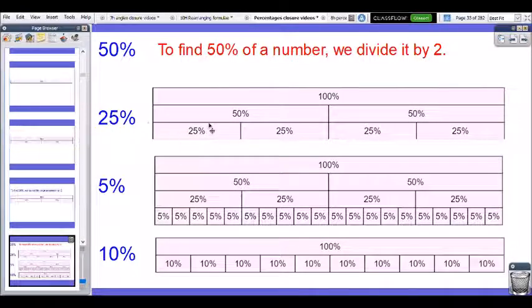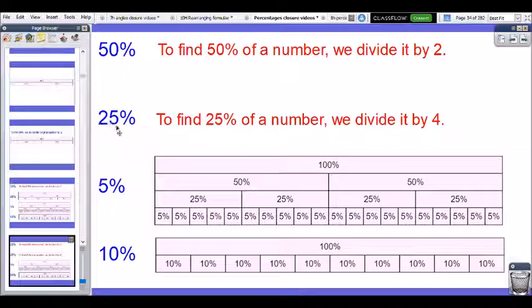How many 25% fit into 100%? Well, 1, 2, 3, 4 lots of 25 fit into 100, which means that to find 25%, we must divide it by 4. And that's why 25% represents one quarter.